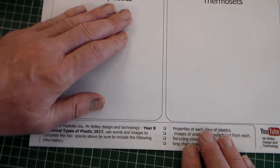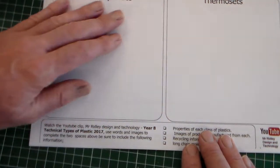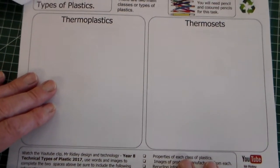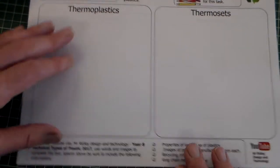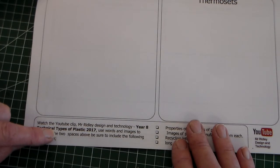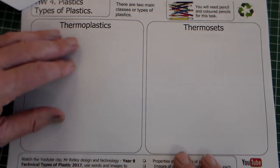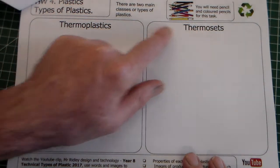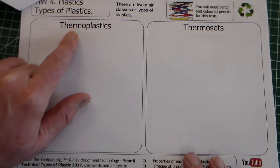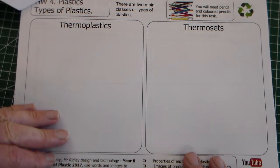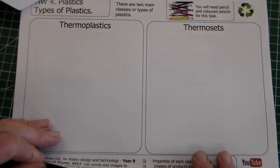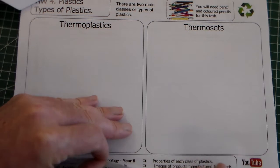There's the information there that I just went through. So again, coloured images here, words, images drawn in here. This needs to be completed. You can watch this YouTube clip which is in the classroom, or you could use Google to search types of plastic thermoplastics, types of plastic thermosets. So that is homework 4 types of plastics.